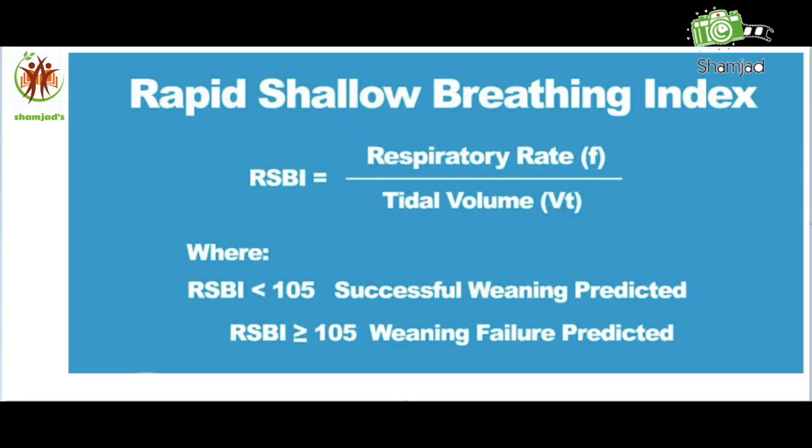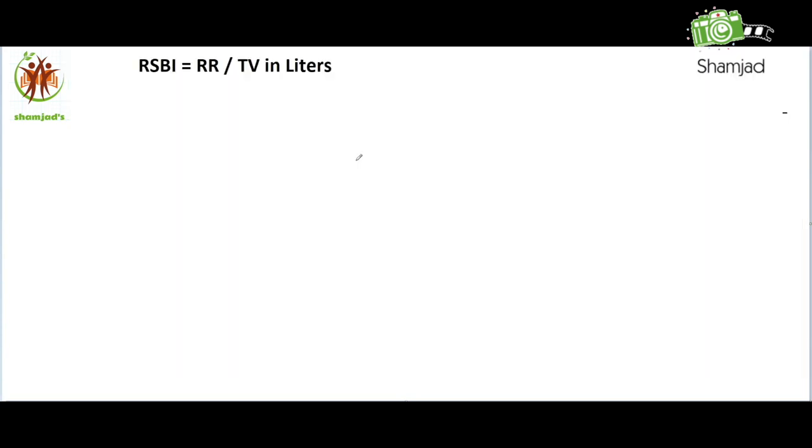And if the value is less than 105, it is associated with weaning success. Now we will see how to calculate the RSBI value. This is the equation here: RSBI, Rapid Shallow Breathing Index, is equal to RR, respirator rate, divided by tidal volume in liters.